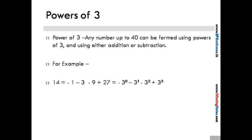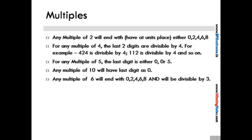A multiple of 2 will have at the units place either of 0, 2, 4, 6, or 8. For multiple of 4, the last two digits of the number will again be divisible by 4. For multiple of 5, last digit is either a 0 or 5. Multiple of 10 has got 0 at the units place. And a multiple of 6, which is a product of 2 and 3, will necessarily be divisible by 3 and will have 0, 2, 4, 6, or 8 at the units place.